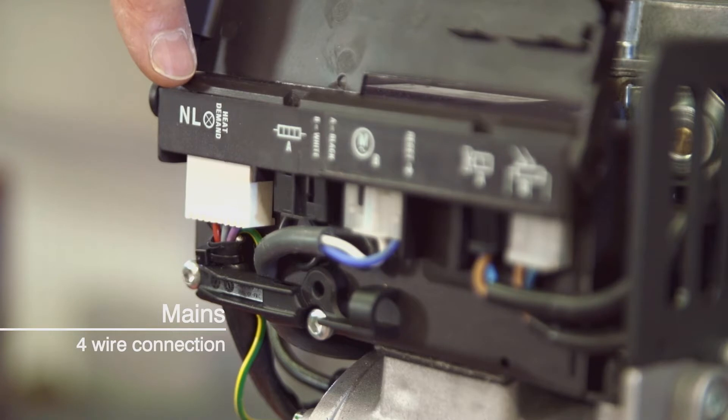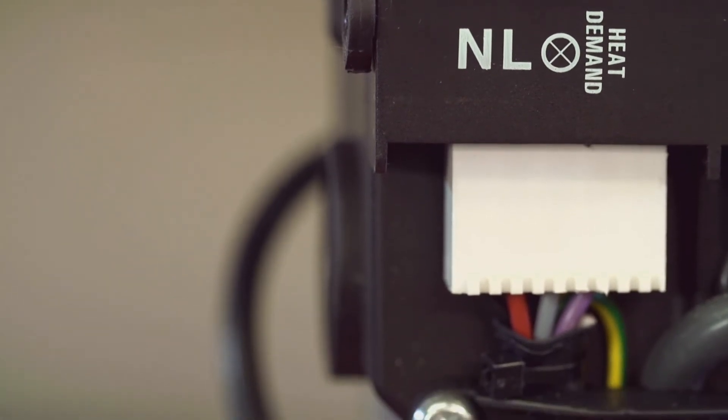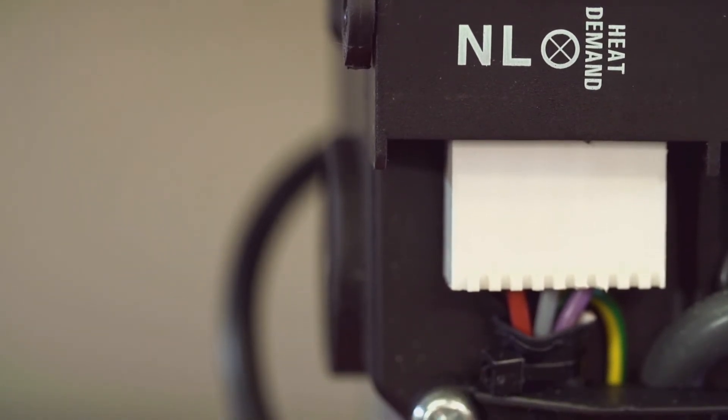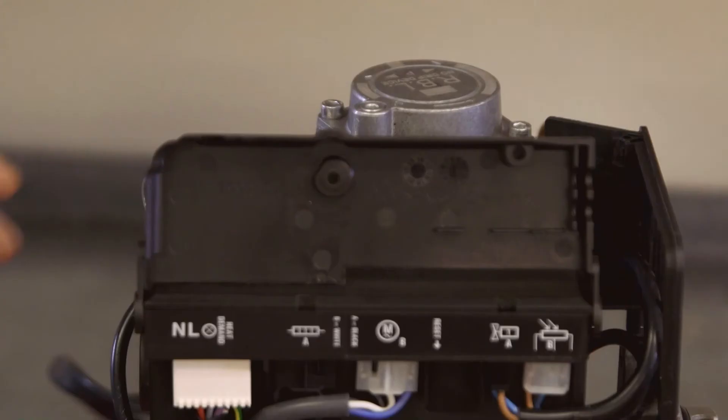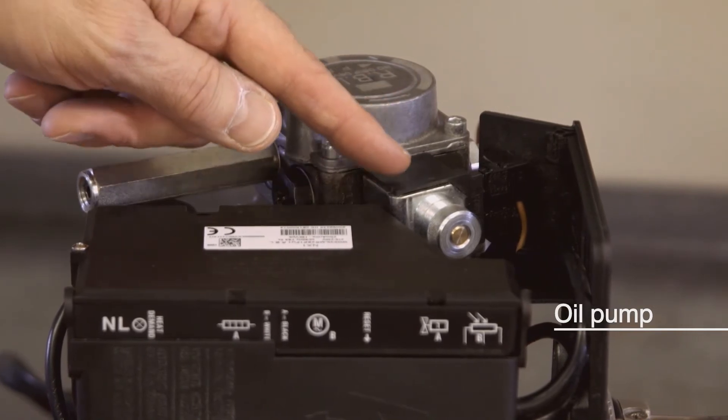This is now a four wire connection as the burner needs both a permanent live for the post purge operation and a switched live to start the burner when there is a demand for it to fire. The oil pump is the same one as usually used and it uses the same solenoid coil.